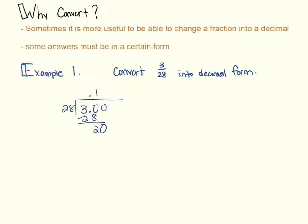28 cannot go into 20, so I'm going to put a 0 up top. Add a 0, bring it down. 28 into 200. Obviously I do not know that at the top of my head, so I'm just going to start guessing and checking off to the right of my paper, and then figure out how many times 28 can actually fit into 200. So pause your screen, guess and check a couple of times, see what you can come up with, and then press play to resume.